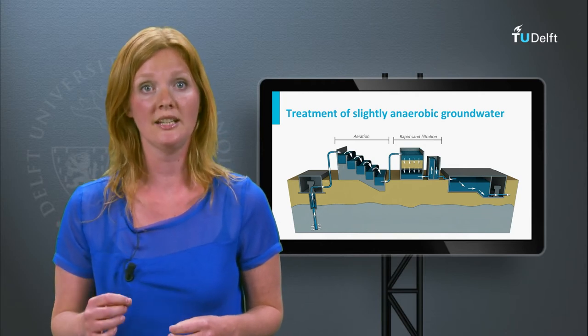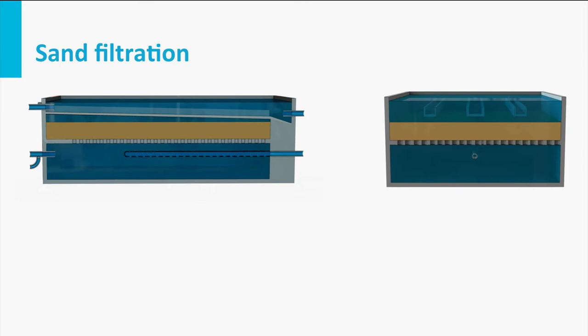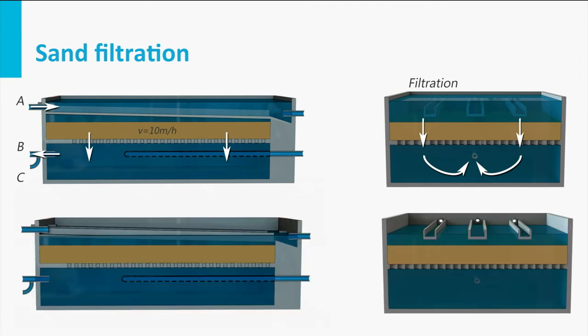Oxygen is also needed for the oxidation of ammonium and manganese. Aeration is followed by sand filtration, where the oxidized ferric iron hydrolyzes to iron hydroxide flocs, which are removed by filtration in the sand bed. Manganese undergoes a partial chemical and biological transformation, while ammonium is biologically degraded by bacteria to nitrate. The growth of these bacteria in combination with the iron and manganese flocs results in an increase of filter resistance, and backwashing is needed to prevent clogging.